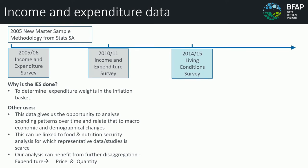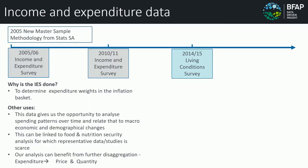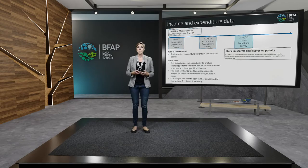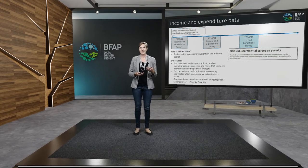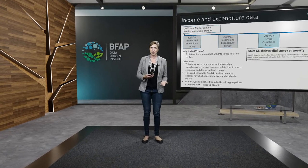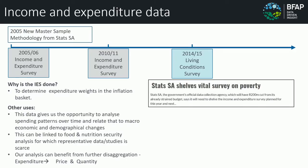Primarily, the IES is used for the weighting in the inflation basket. Recently in 2014-15, budget constraints from Stats SA caused the IES to be downscaled and combined with a living conditions survey, so we're reducing the number of data points being captured. Most recently in 2019-2020, budget cuts again influenced a cut in data coming in, and the IES that was supposed to be running last year was also cut.